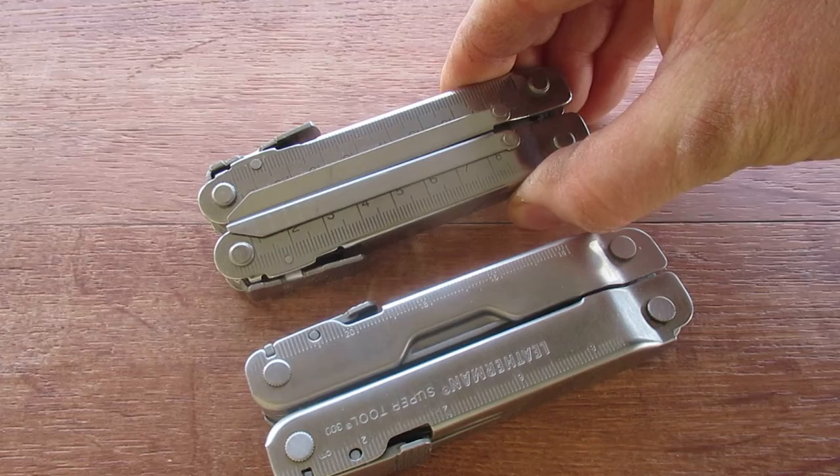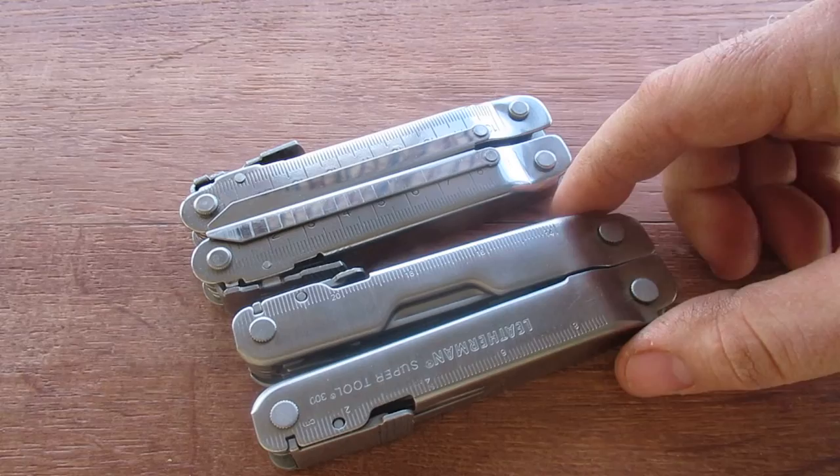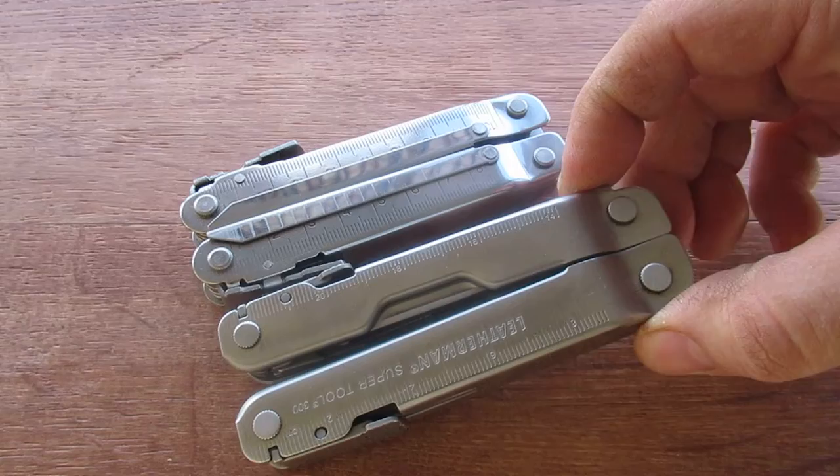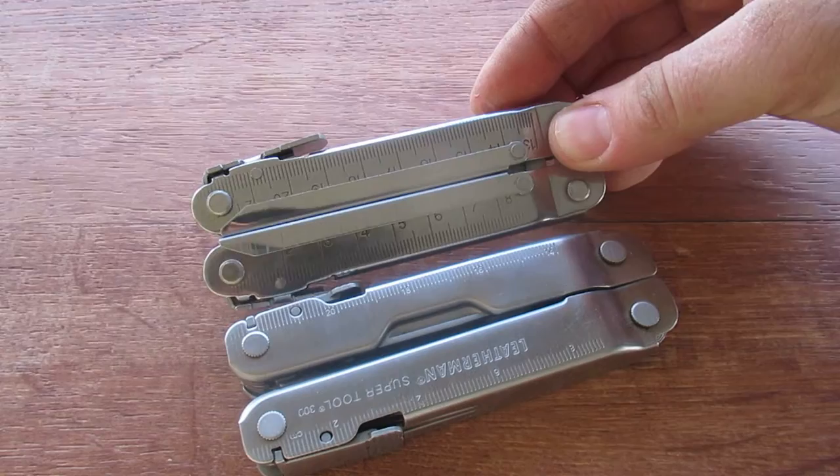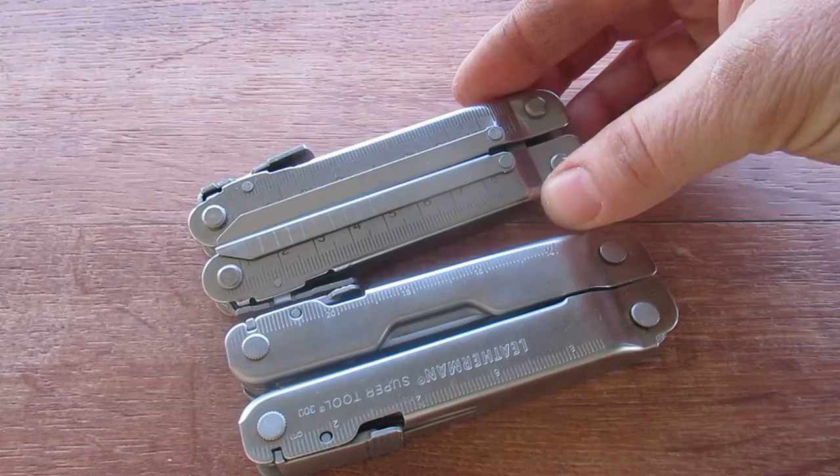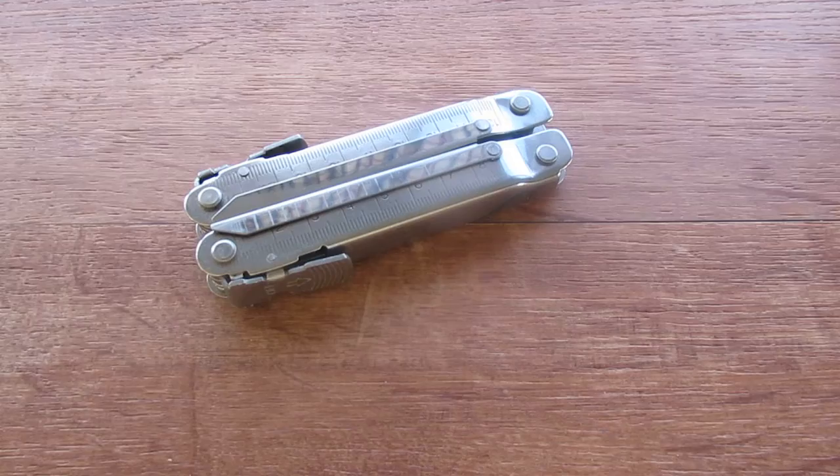Now, in case you haven't noticed, this is a Leatherman super tool 300, one of Leatherman's largest multi-tools. This multi-tool right here is called mini and it is basically the same size as the Leatherman 300. So that definitely is not a very good description at all. So let's go ahead and move the Leatherman 300 out of the way.